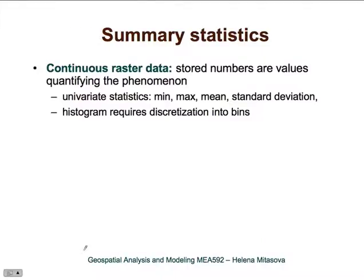Let's first look at summary statistics in continuous raster datasets. Stored numbers are values that quantify the phenomenon, for example, elevation or precipitation. For such values, we can define univariate statistics — for example, we can compute mean elevation and its standard deviation. Another useful summary statistic is the histogram, but for floating-point data, we need to discretize the data into bins.